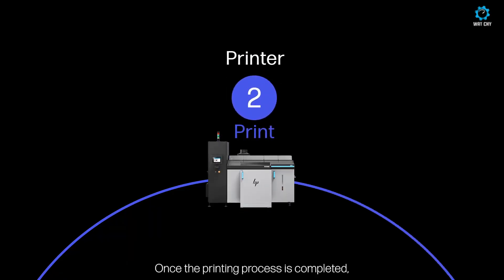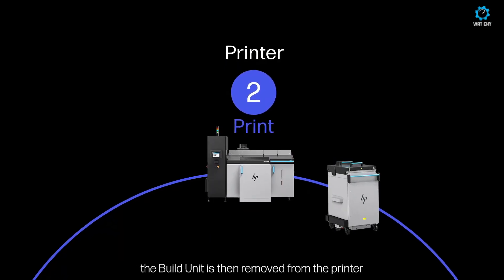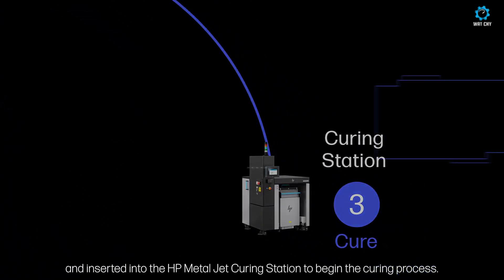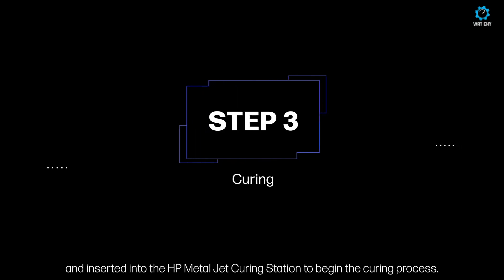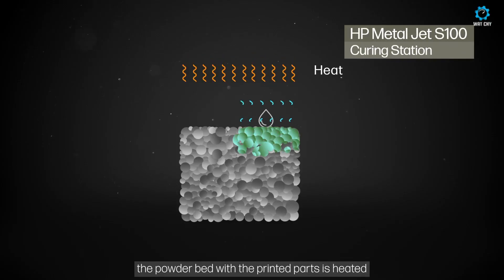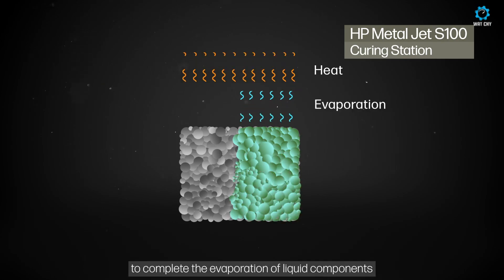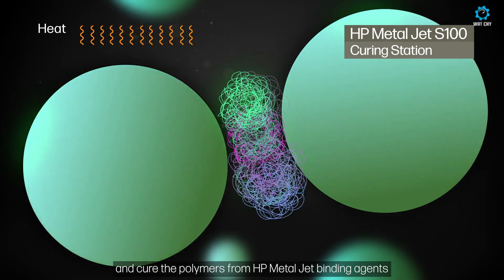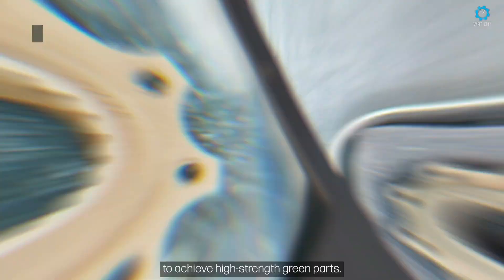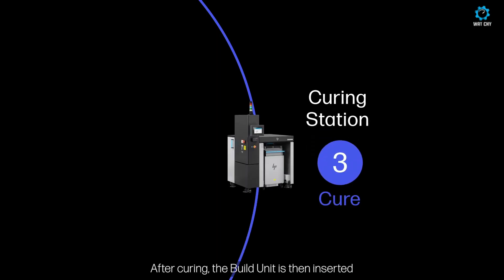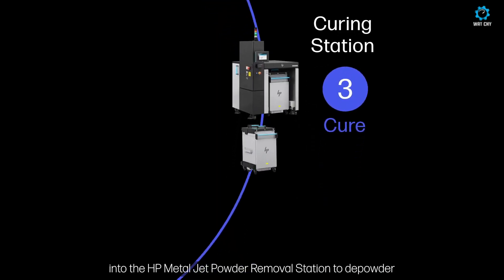The build volume of 430x320x200mm allows for the creation of large, complex parts, making the S100 an excellent choice for industries that require high-volume production, including automotive and industrial applications. It is compatible with a variety of materials, including stainless steel and tool steel, and boasts a layer resolution of 35 to 140 microns, ensuring the production of detailed, high-quality parts.